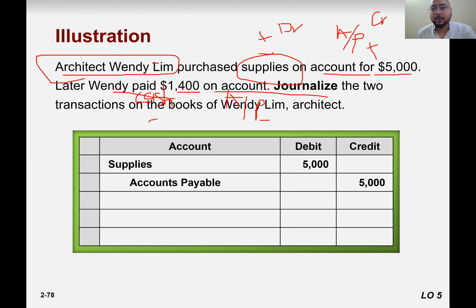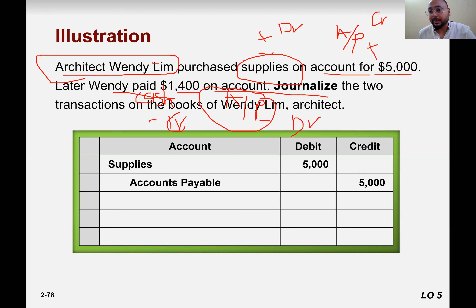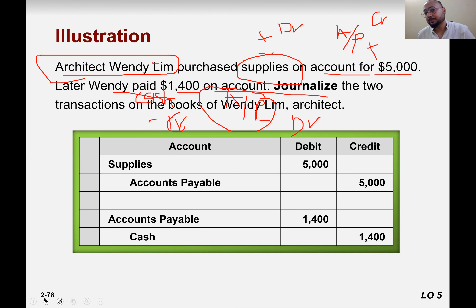When cash is paid, the cash balance goes down — cash decreases, which is a credit. When a liability decreases, we debit it. So the journal entry would be accounts payable debit, and cash credit. Those who made a wrong entry, please confirm that.